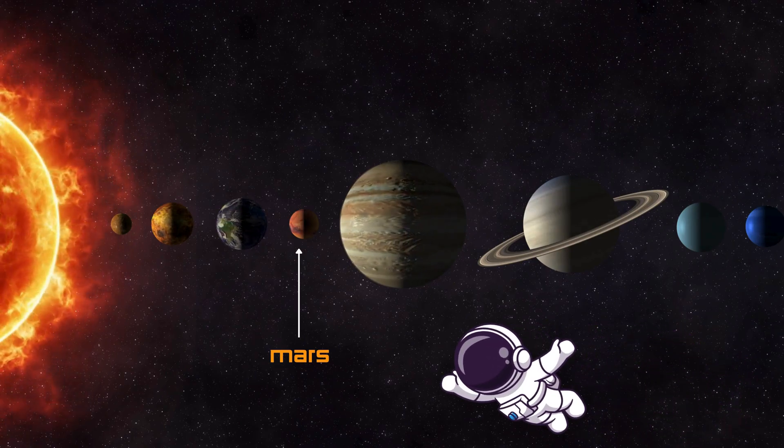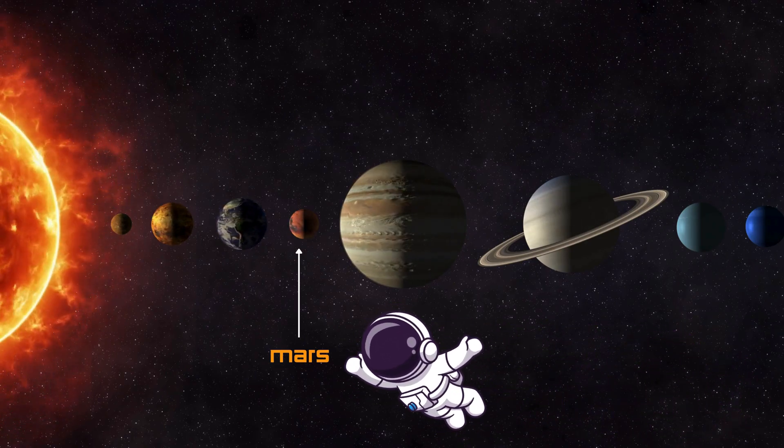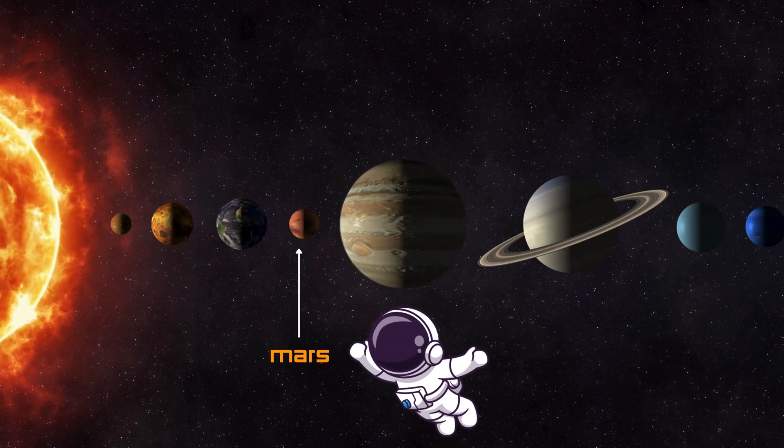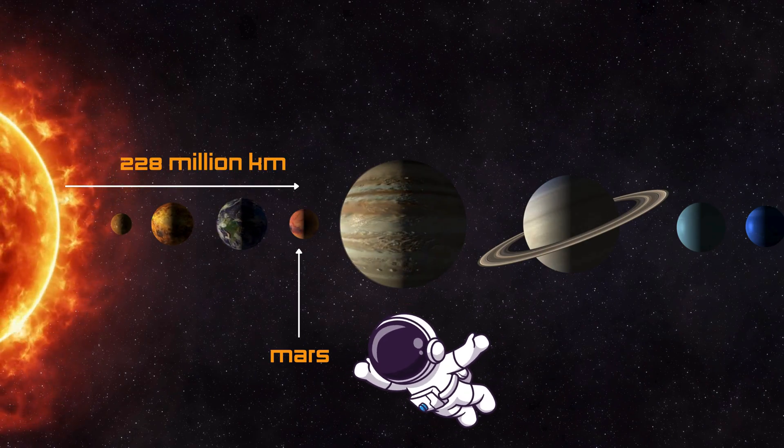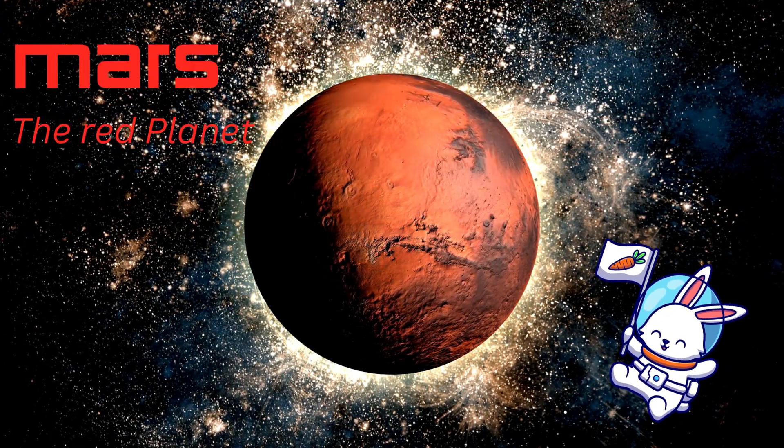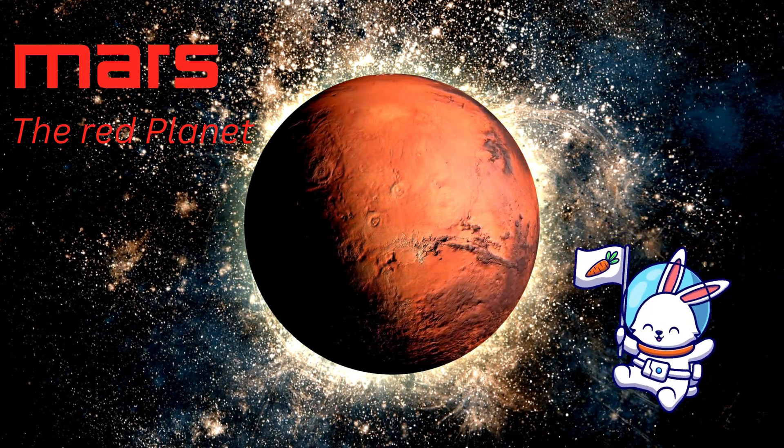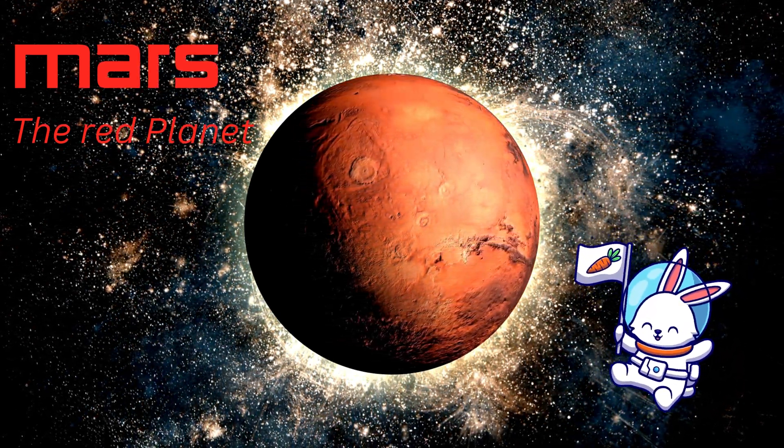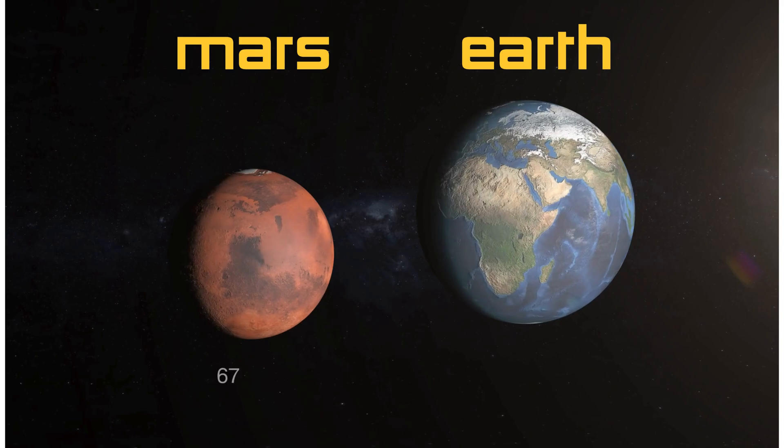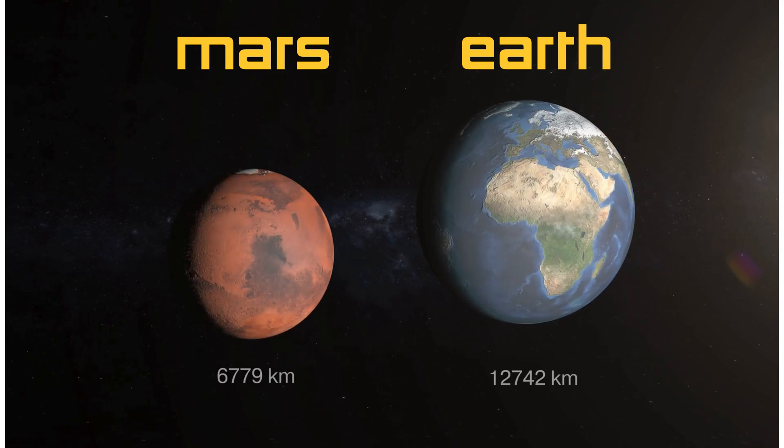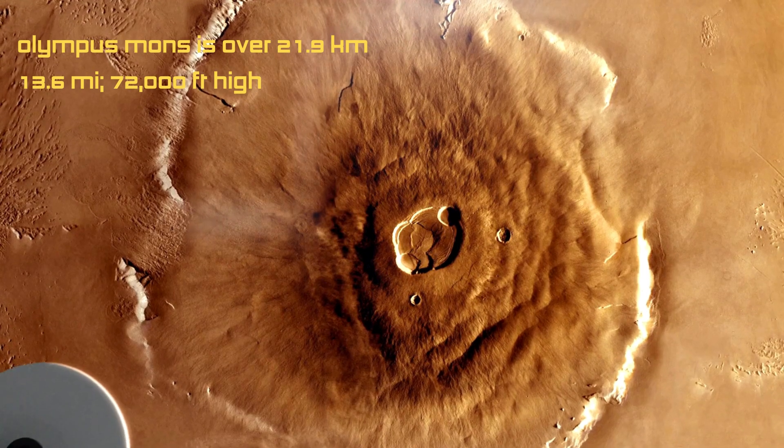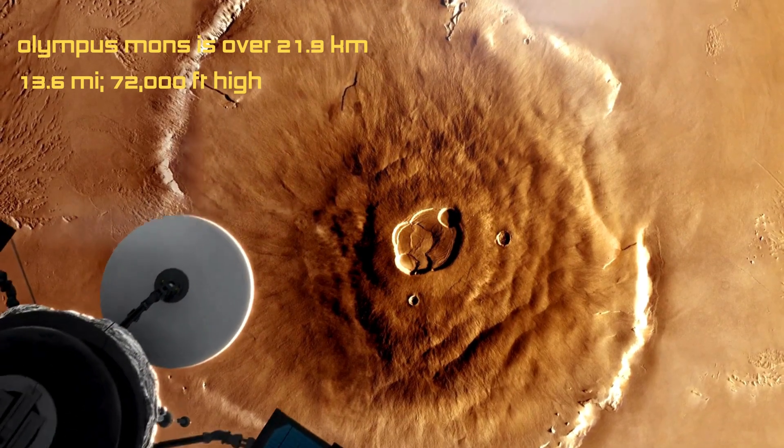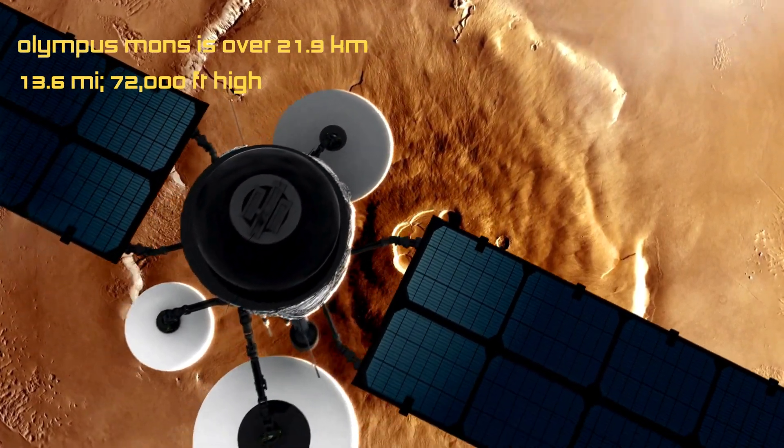Now we're off to Mars, the red planet! Mars is about 142 million miles, 228 million kilometers from the sun, and it's covered in red dust and rocks. That's why it looks like a giant red ball in the night sky. Mars is smaller than Earth, and has the tallest volcano in the whole solar system, called Olympus Mons. It's three times taller than Mount Everest.